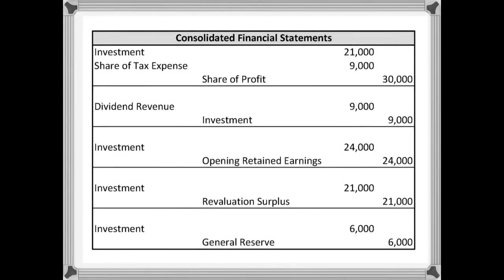Here we have the consolidated financial statements and all the entries that have been made in relation to the equity accounting example. The first thing to remember is this is an associate where the investor has a 30% share in the company, so all of these figures are going to be 30% of the associate's amounts that we saw on the information page earlier.